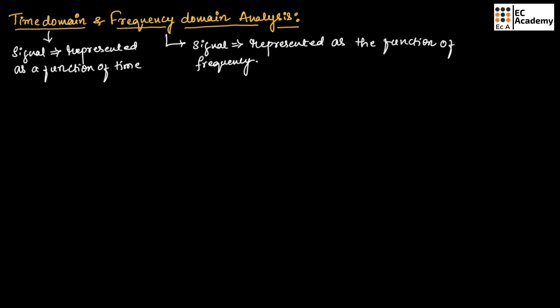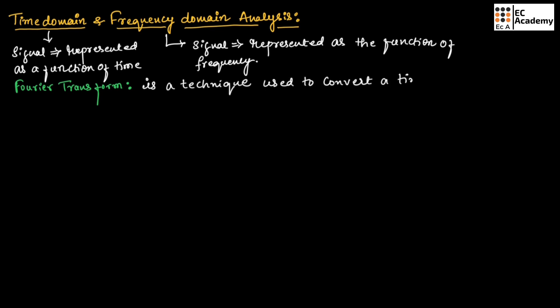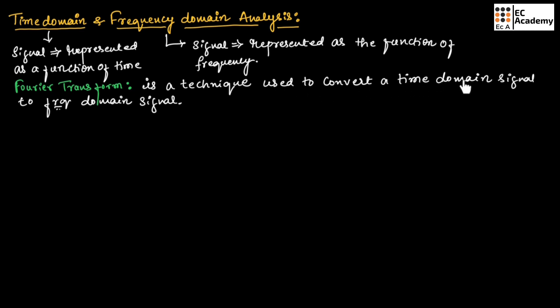The process used to convert from time domain to frequency domain is known as Fourier transform. Fourier transform is a technique used to convert a time domain signal to a frequency domain signal, and it will be used for this conversion.